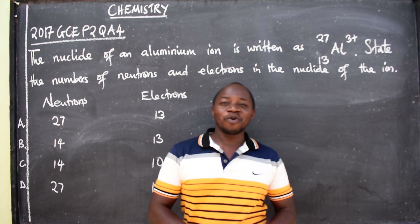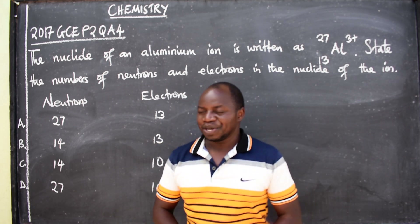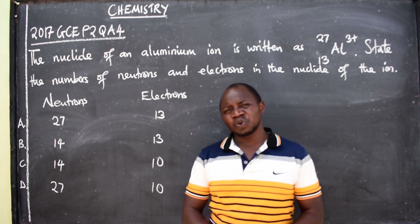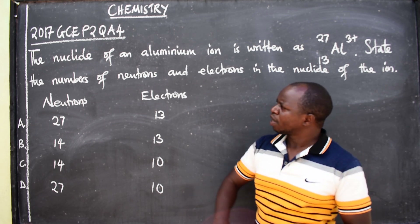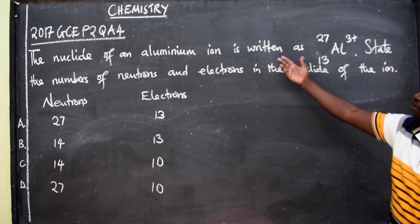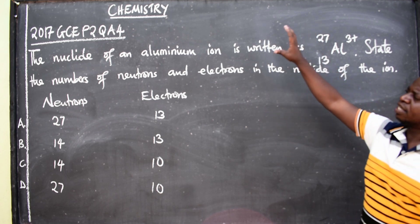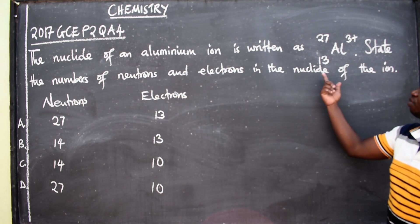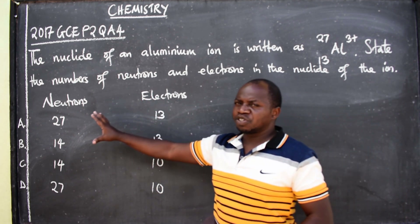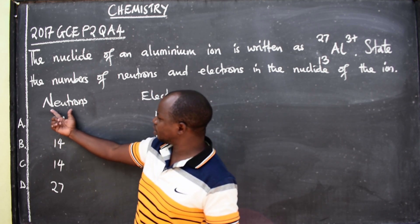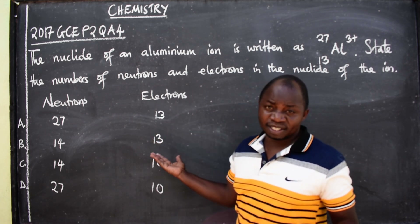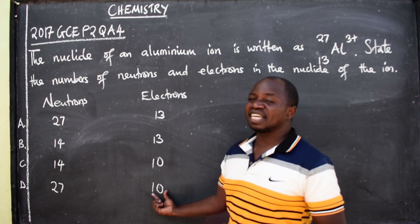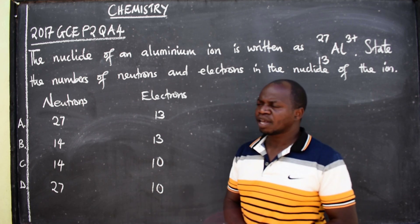Hello ladies and gentlemen, hope you are well. This is chemistry. In this lesson we want to look at this question from 2017 GCE paper 2, chemistry paper 2, 5124, question A4. The nuclide of an aluminium ion is given. We are asked to state the numbers of neutrons and electrons. The options are: A — neutrons 27, electrons 13; B — neutrons 14, electrons 13; C — neutrons 14, electrons 10; D — neutrons 27, electrons 10. Which one do you think is the correct option?